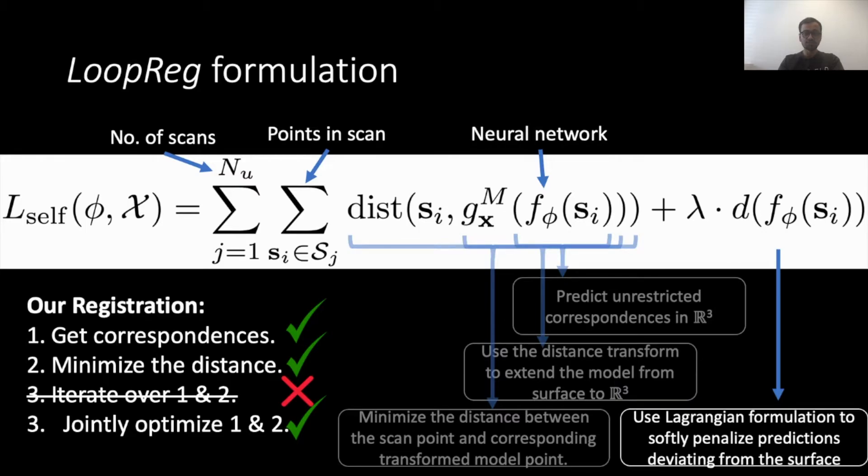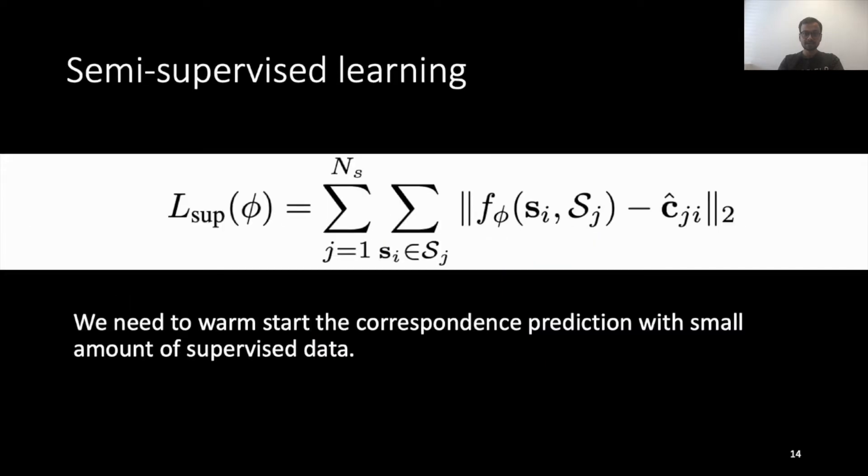Note that this formulation allows us to train LoopReg with self-supervision. In practice, we find that randomly initializing the correspondence prediction gets the optimization stuck in local minima. We need a small amount of supervised warm start.